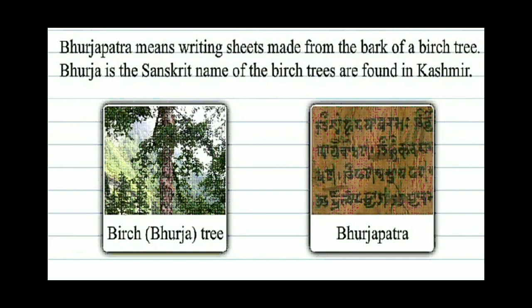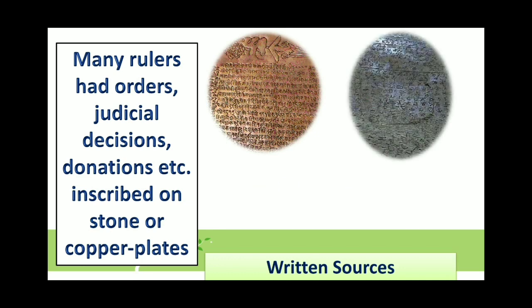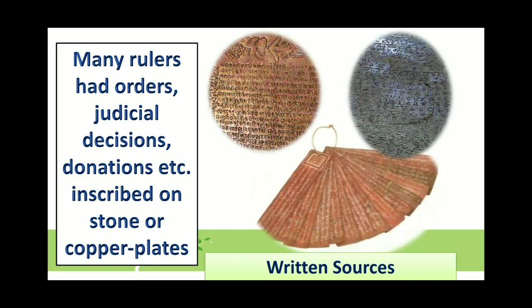Bhurja patra means writing sheets made from the bark of the birch tree. Bhurja patra is the Sanskrit name for birch trees, which are found in Kashmir, and they were also used for writing. Today we can consider these as sources of history. Many rulers had orders, judicial decisions, donations, etc. inscribed on stone or copper plates, and these are very important sources to know about that particular ruler, that period's administrative system, and its religious and political aspects.